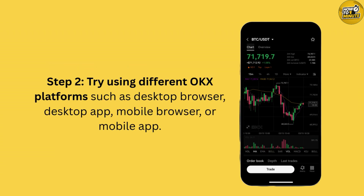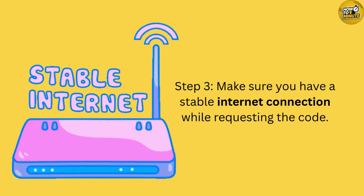If that doesn't work, try using a different platform to request the code. You can switch between the desktop browser, desktop application, mobile browser, or the mobile app version of OKX. Sometimes a specific platform might be having issues, and switching can help you bypass that.